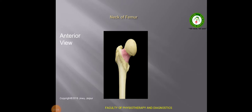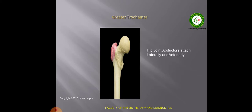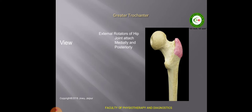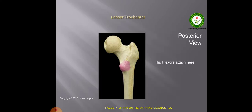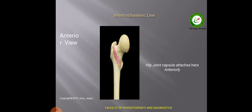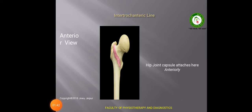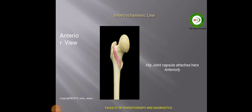This is the neck of femur. This is the anterior view of the neck, lying between the head and the rest of the femur. This is the greater trochanter. Here lies the attachment of the abductors which can abduct the hip joint. This is the posterior view of the greater trochanter. This is the lesser trochanter on the posterior side; here we have the attachment of the hip flexors. This is the intertrochanteric line, a line between the two trochanters. It lies on the anterior aspect of the bone and gives attachment to the capsule of the hip joint.